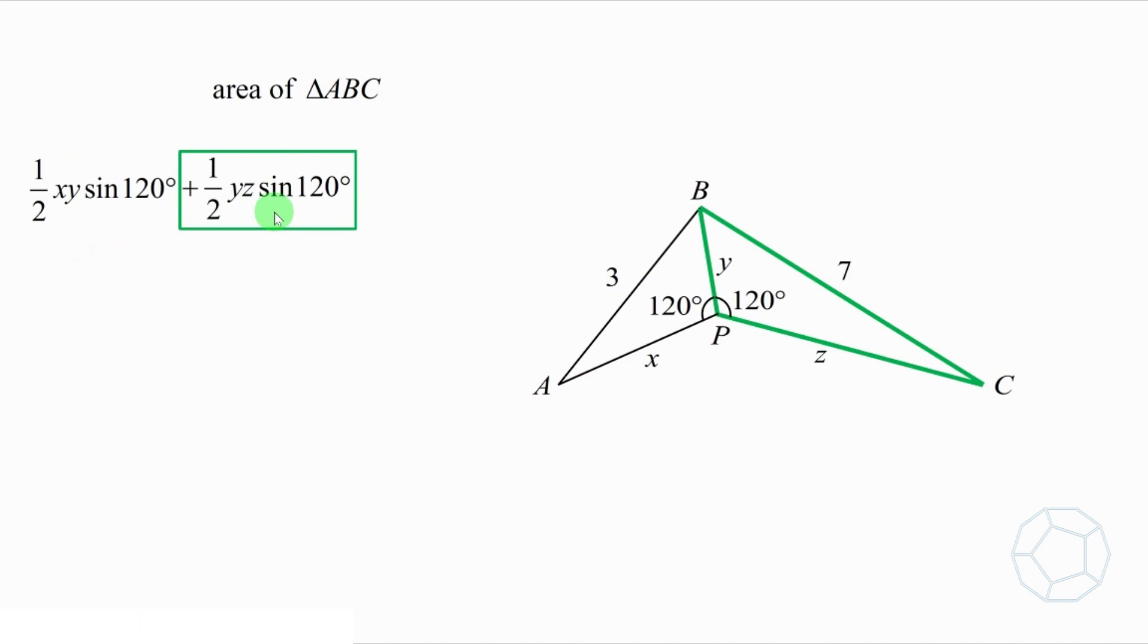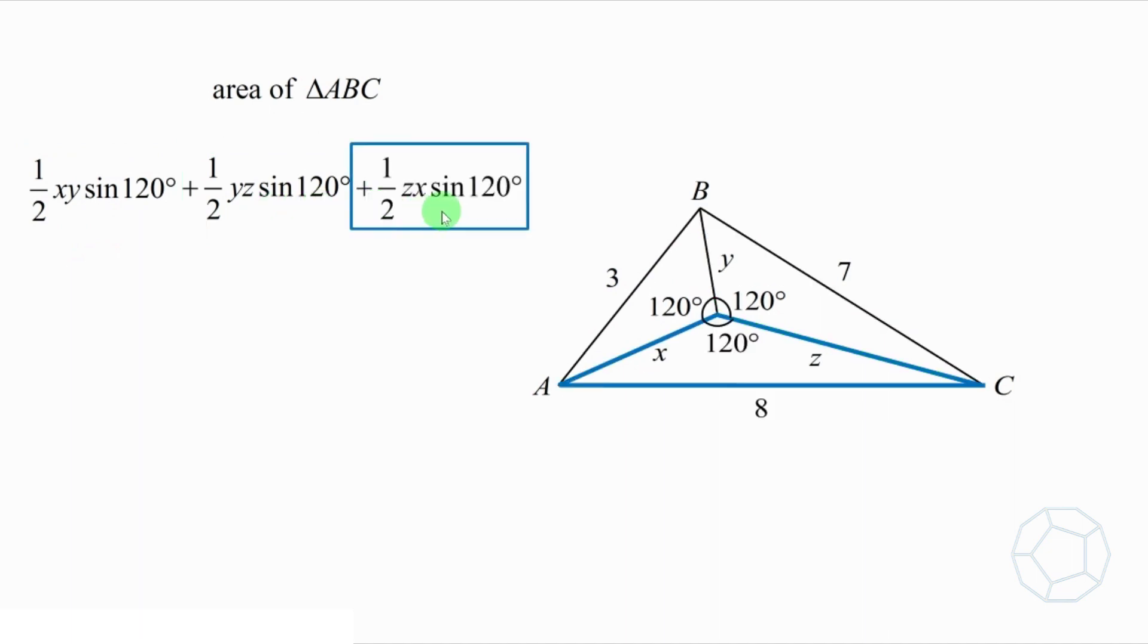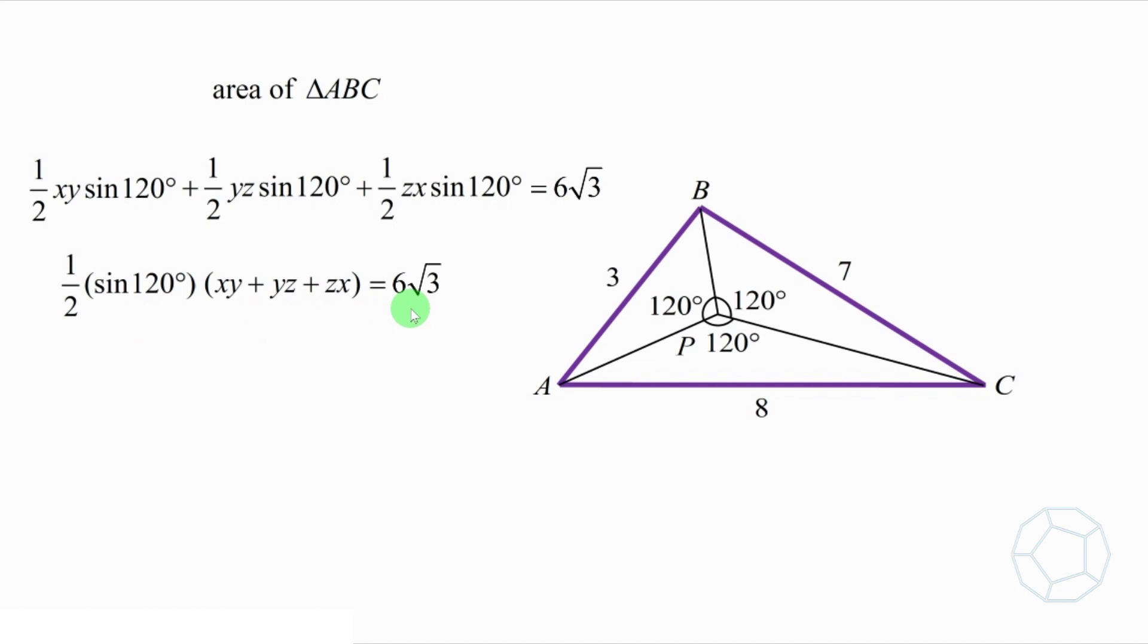Then we can break down the area of triangle A, B, C into 3 parts, which are 1 over 2 xy sine 120 degrees plus 1 over 2 yz sine 120 degrees plus 1 over 2 zx sine 120 degrees. And the sum is equal to 6 times square root 3. Take out the common factors, 1 over 2 times sine 120 degrees. We have xy plus yz plus zx is equal to 6 square root 3.